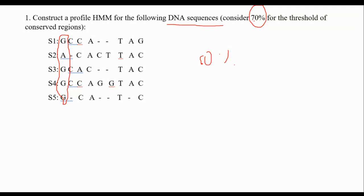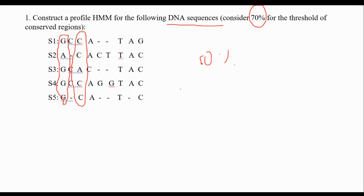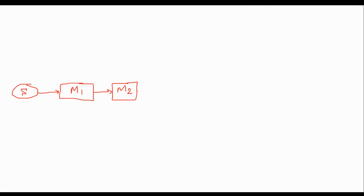For the next position, I see three letters, not four — that's 60%, which is less than my 70% threshold. If I changed the threshold to 50%, then yes, this would be a conserved region, but not now. So in that scenario I don't consider it a conserved region. For the next one, I have four C's, so I reach the second conserved region M2 — it's in the third position. So M2 doesn't mean the second position, it means the second conserved region.